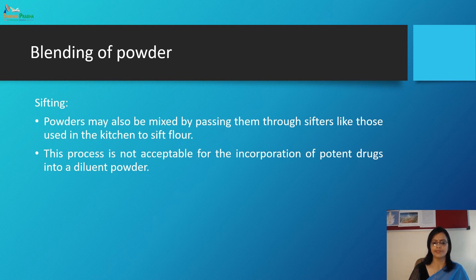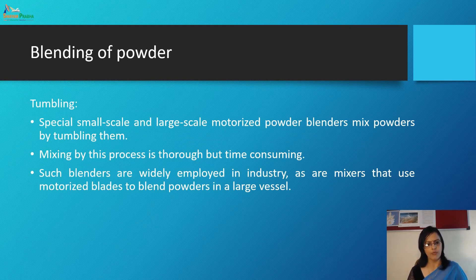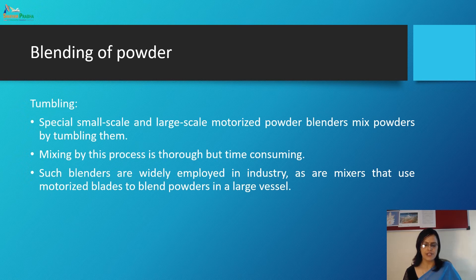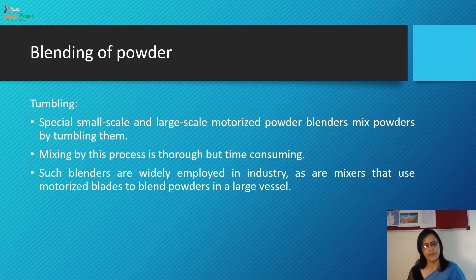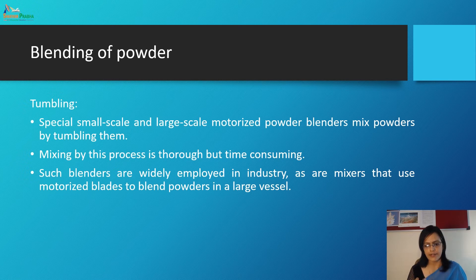Next is tumbling, another method of mixing powder. Tumbling of powder in a rotating chamber — a special small-scale or large-scale motorized powder blender — mixes powders by tumbling them. Mixing by this process is thorough but it is very time-consuming.